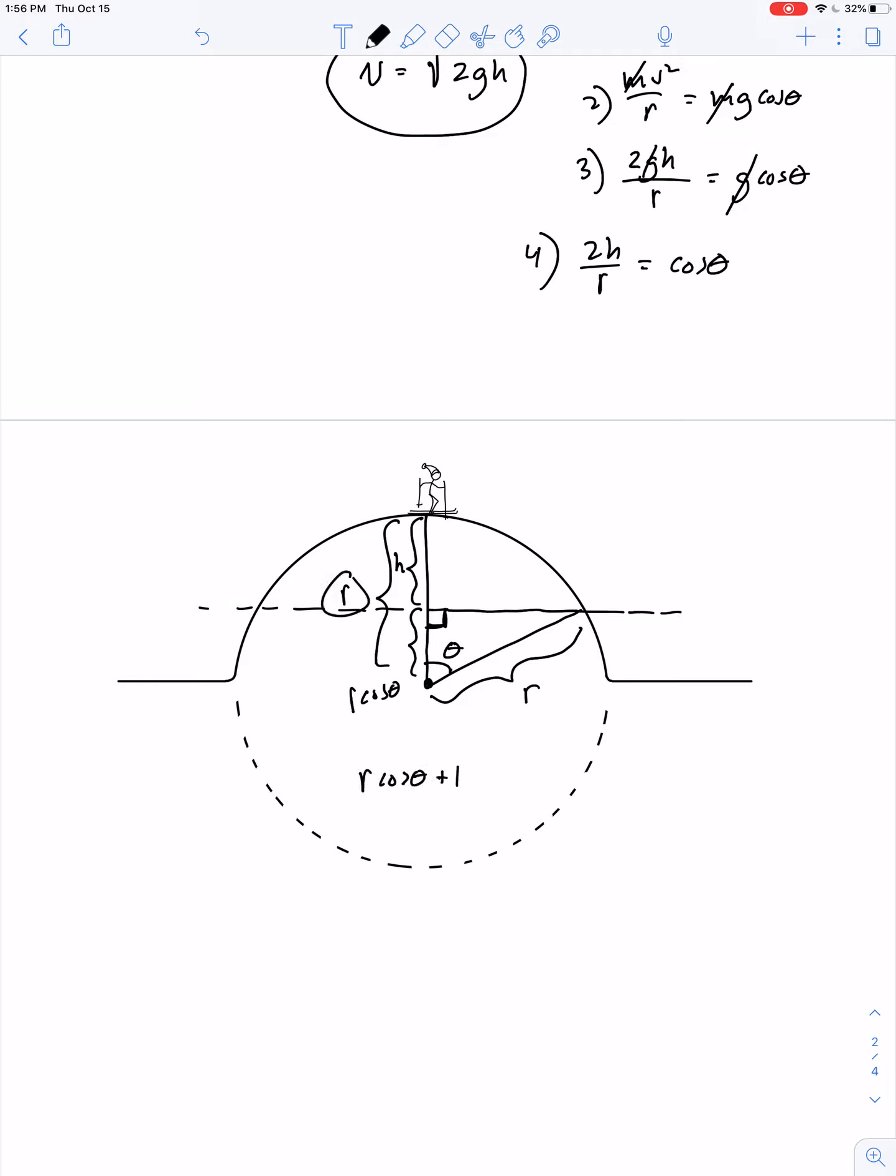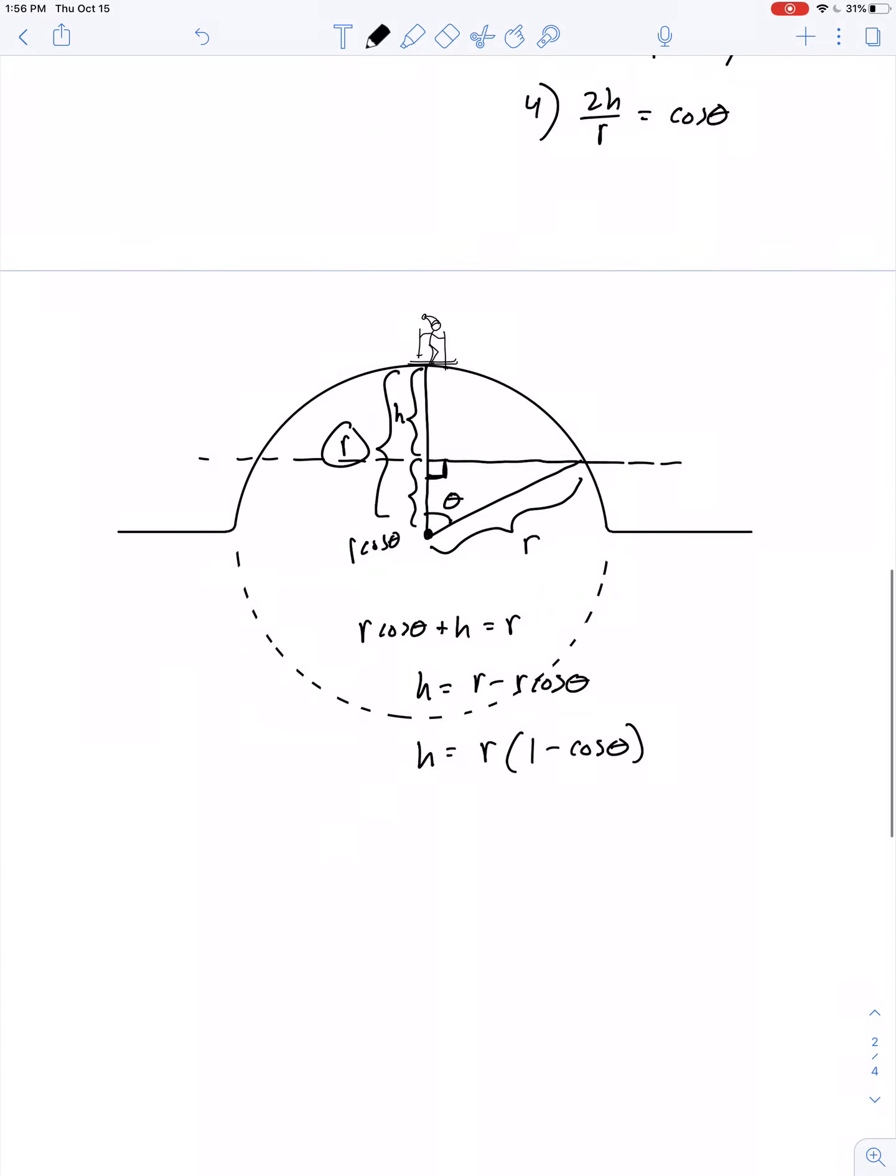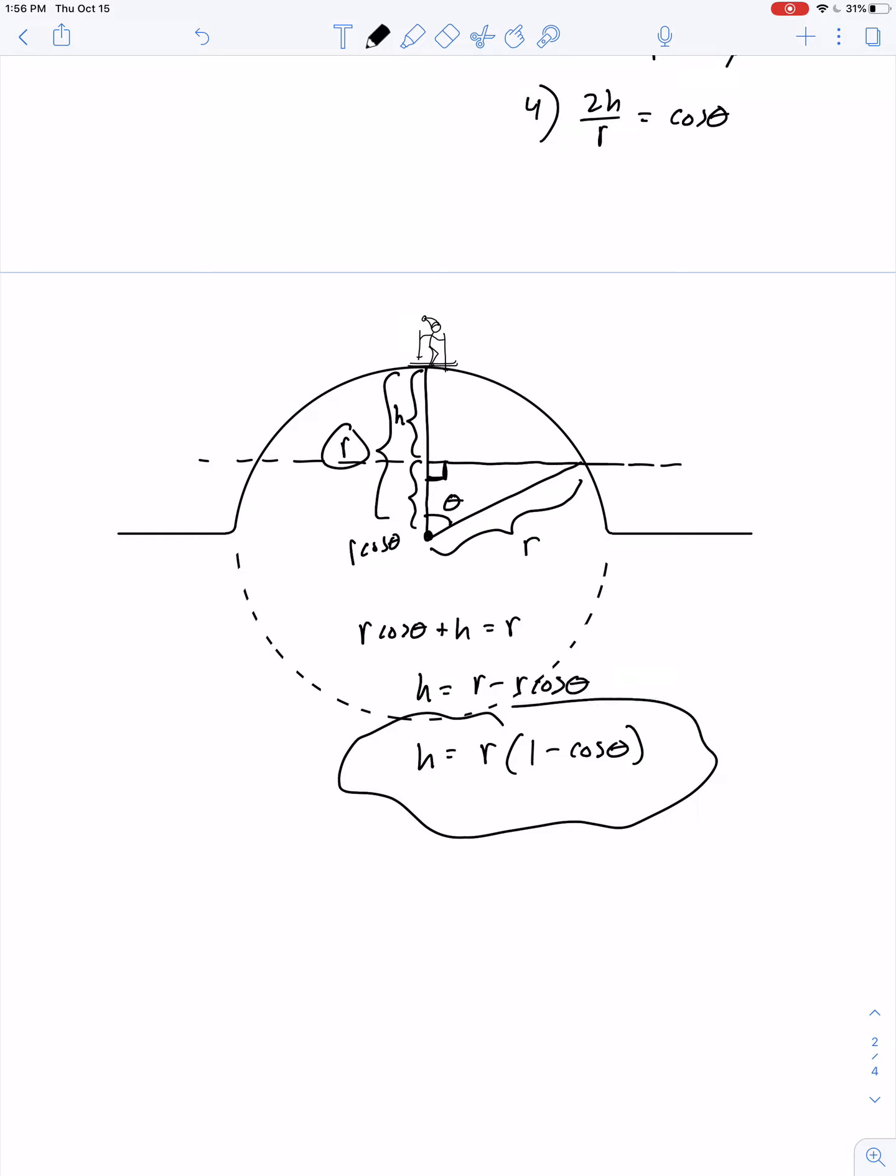r cosine theta plus h is equal to r. So h is equal to r minus r cosine theta, or h is equal to r times the quantity 1 minus cosine theta. This probably looks familiar to some of the algebra work we had in the example of the rope swing. Okay, so I get to make a substitution now.